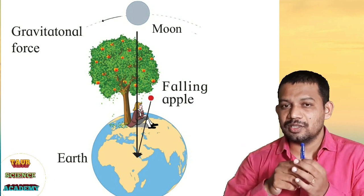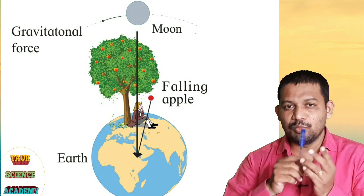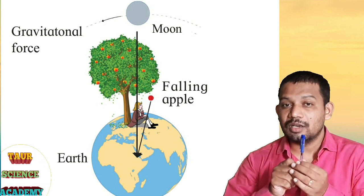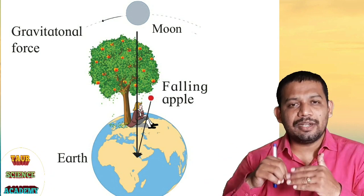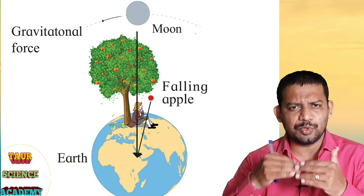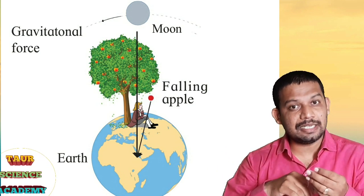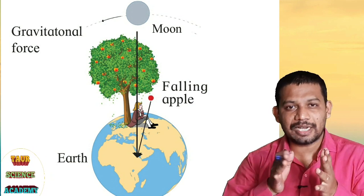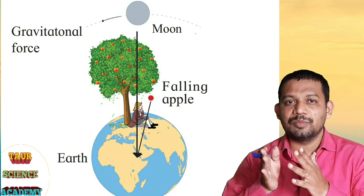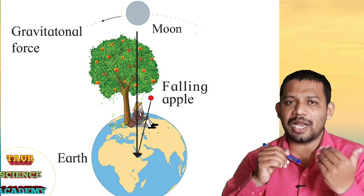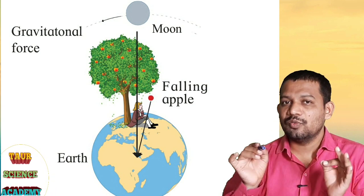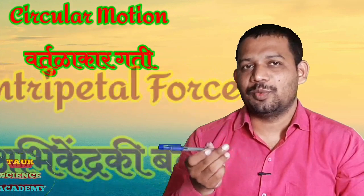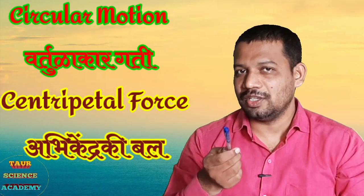From that center, the earth applies gravitational force on the moon. For example, the sun and the planets revolving around the sun, and the moon revolving around the earth — all experience this force. So let us now discuss the next point: circular motion and centripetal force.